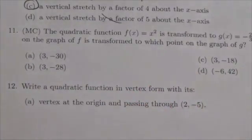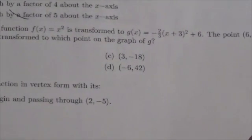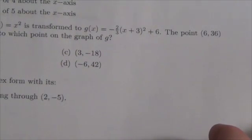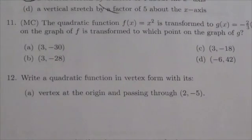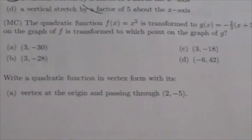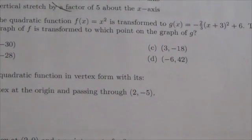It says the quadratic function f(x) = x² is transformed to g(x) = -2/3(x + 3)² + 6. The point (6,36) on the graph of f is transformed into what point on the graph of g(x)?